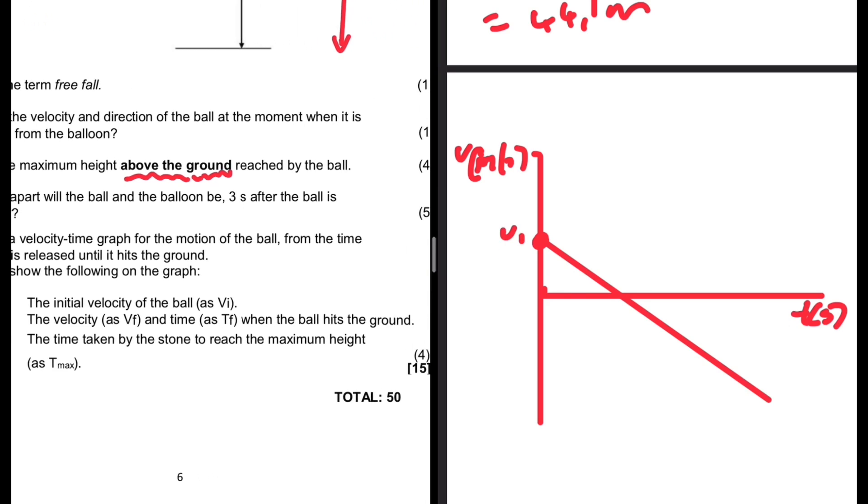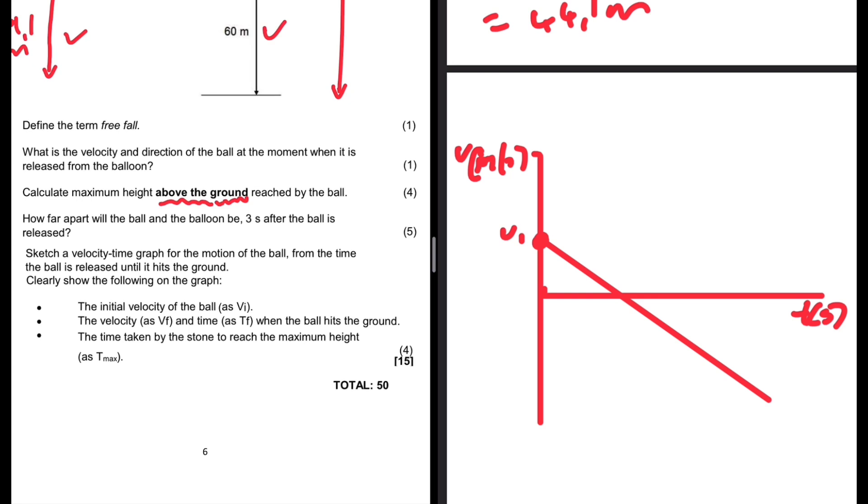Here we have tf. This is vf. The second bullet point says the velocity vf and the time it strikes the ground. No, I'm making a mistake here. Tf is supposed to be here - that is the time it strikes the ground. This is vf, the velocity at which it strikes the ground. Here I'm going to have t max, the time at which it reaches maximum height.